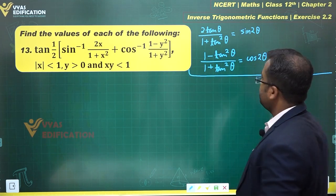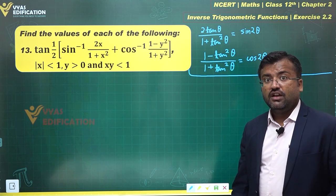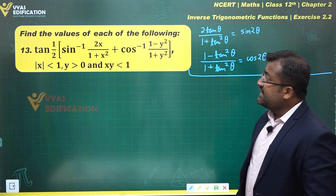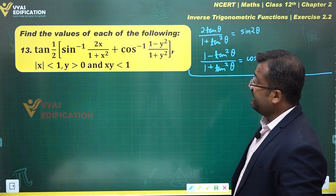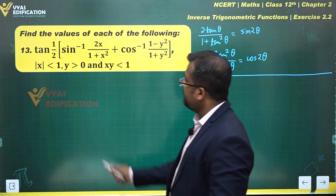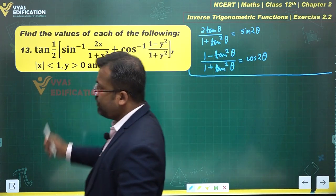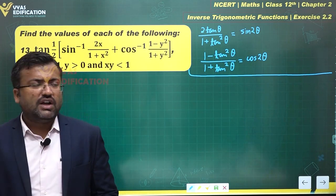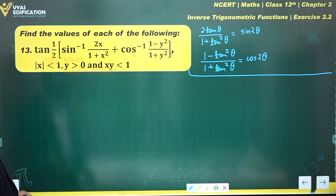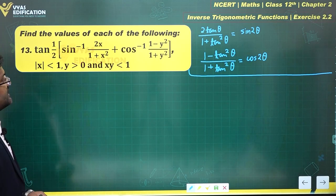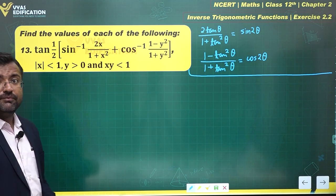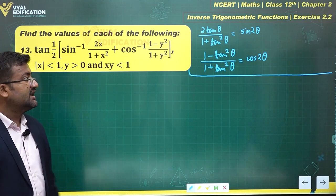We are also given the conditions: y greater than 0, mod x less than 1, and the product xy less than 1. Let's keep that in mind and try to solve this question further.